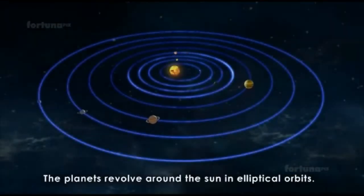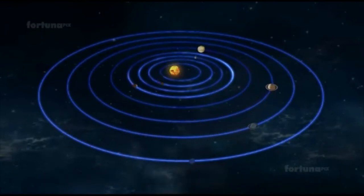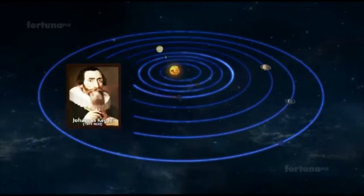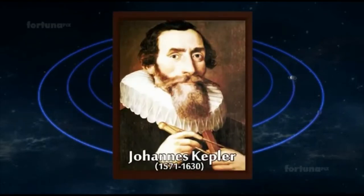The planets revolve around the Sun in elliptical orbits. This fact was discovered by the German astronomer Johannes Kepler, who proposed the three laws of planetary motion.